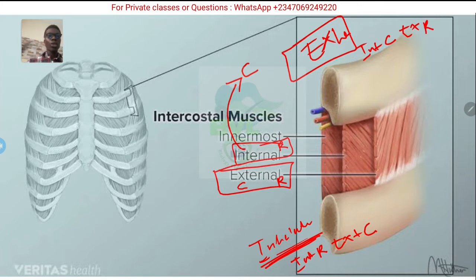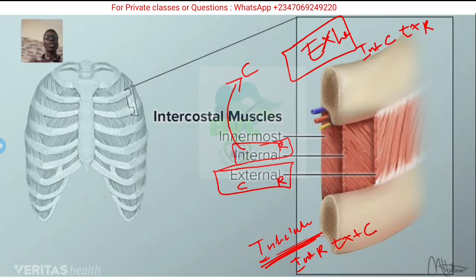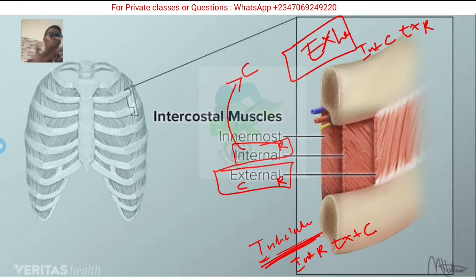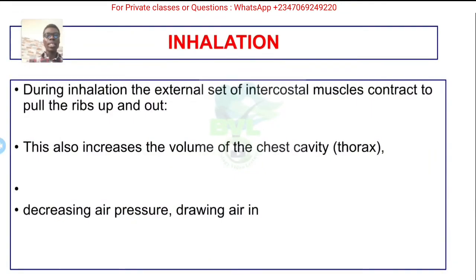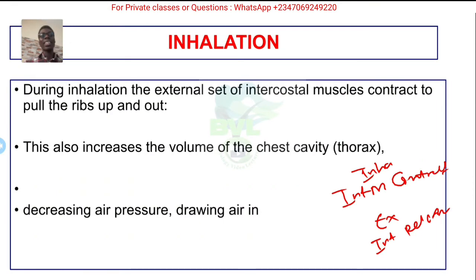To summarize: during exhalation — internal contract, external relax. During inhalation — internal relax, external contract. For O-level we simply say intercostal muscles contract on inhale and relax on exhale. But at A-level there are actually two sets — internal and external — and during inhalation the external set contracts to pull the ribs up and out.